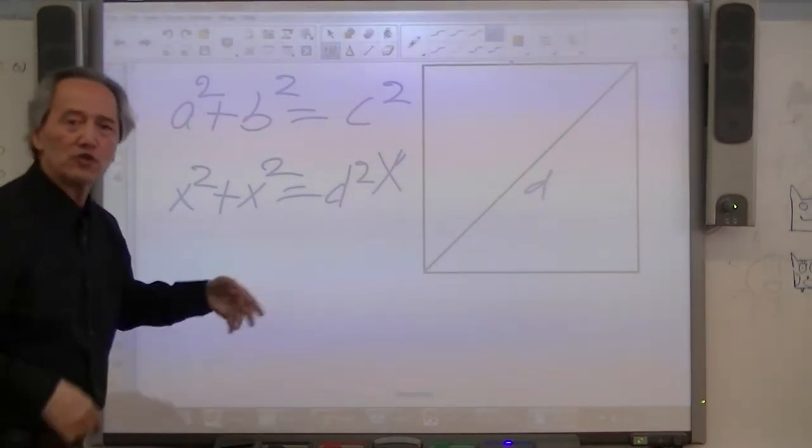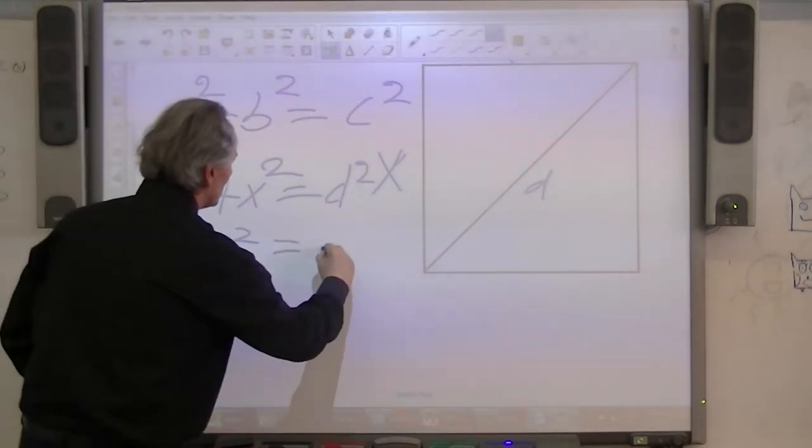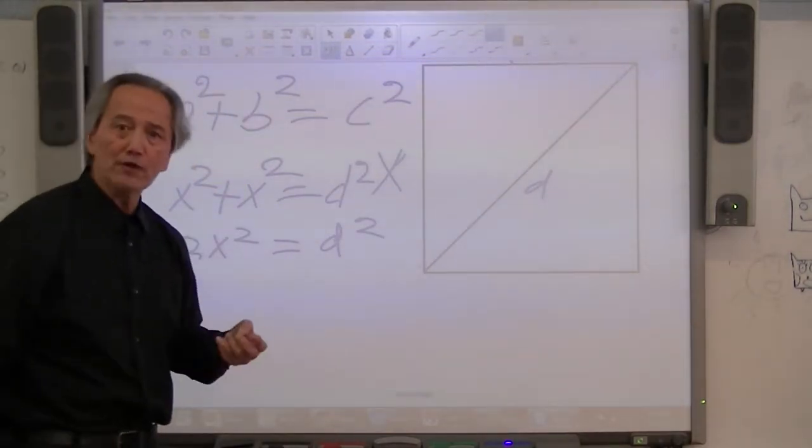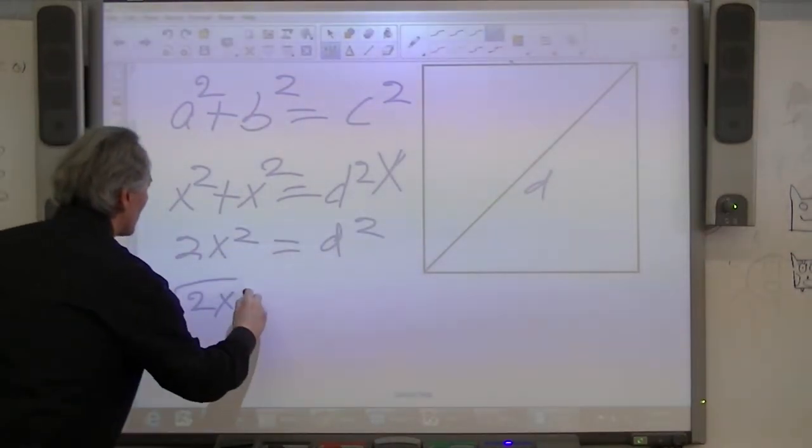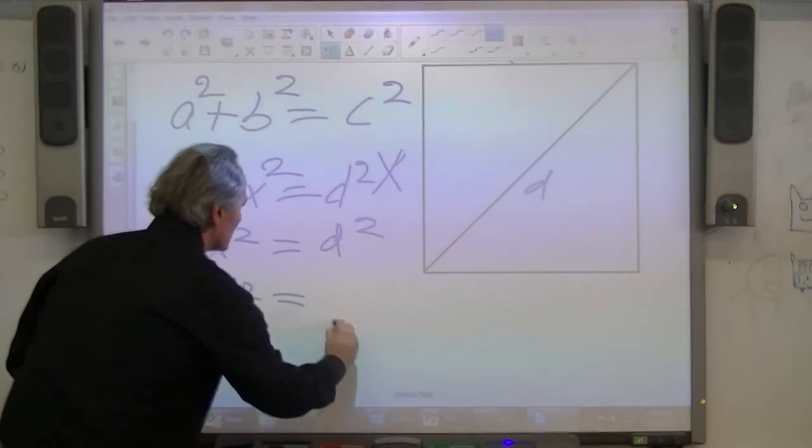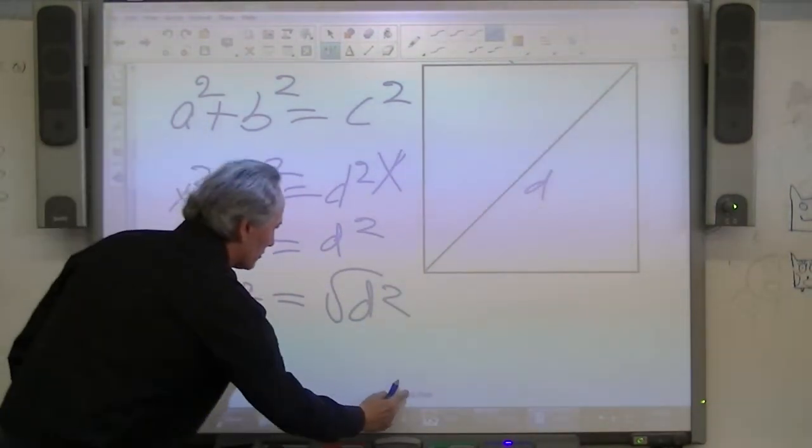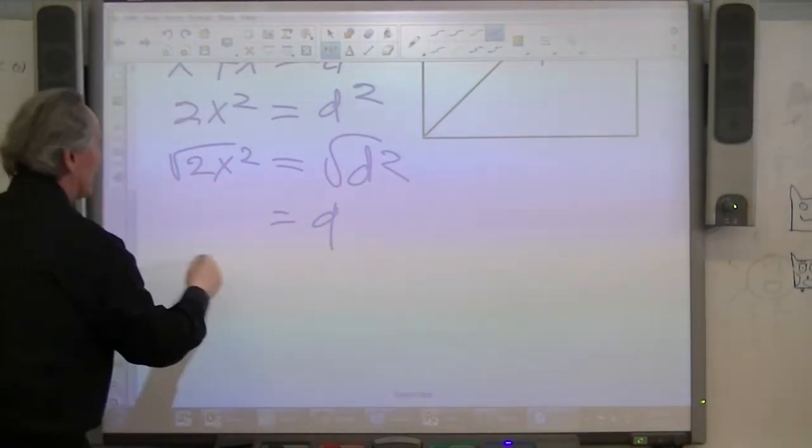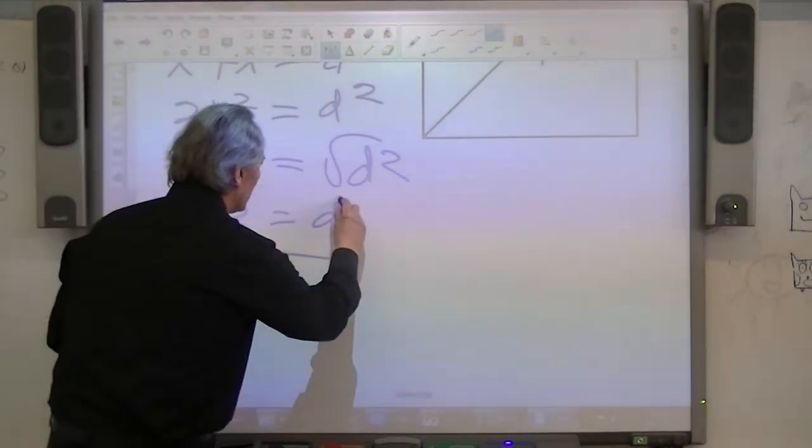Let's combine terms. So hence we get 2X squared equals D squared. Let's try and eliminate the exponents by taking the square root of both sides. If we take the square root of 2X squared equals the square root of D squared, we will derive the square root of 2 times X equals D.